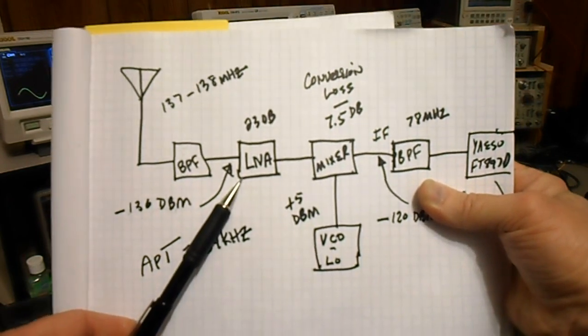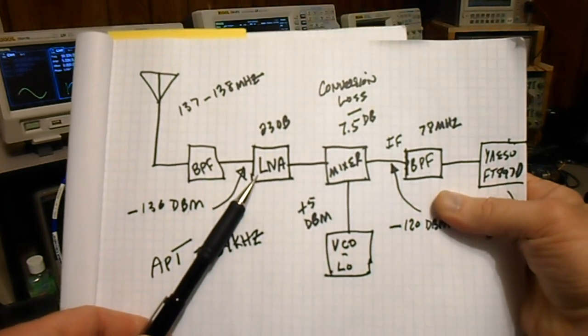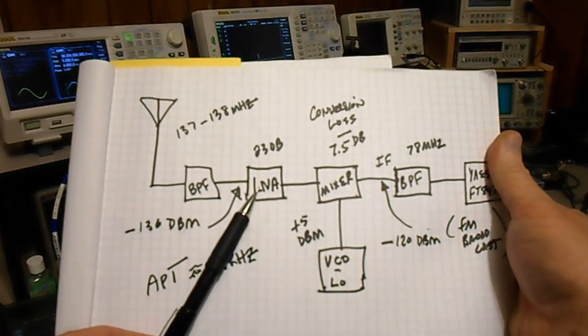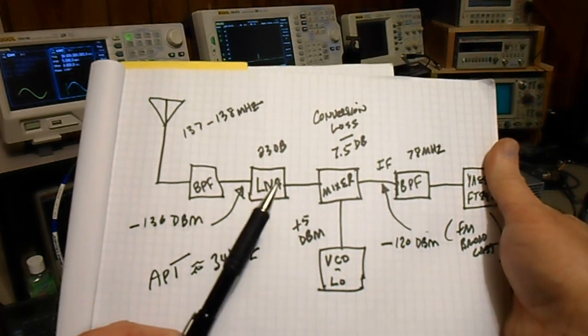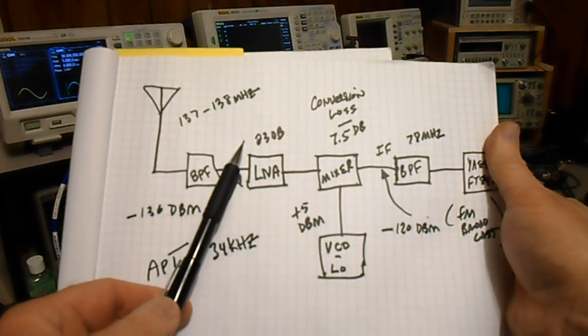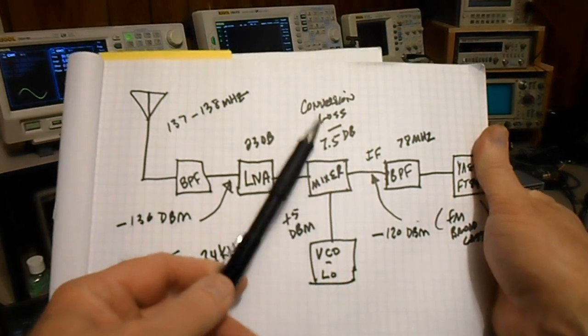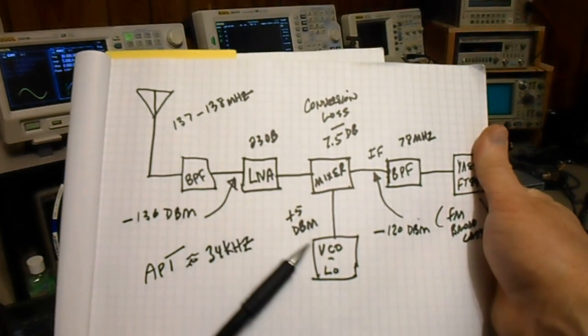That's really low. That's better than any receiver you're going to get ham radio wise that I'm aware of. And so there's a low noise amplifier with 23 dB of gain roughly, and then goes into a mixer, which has a 7.5 dB conversion loss.